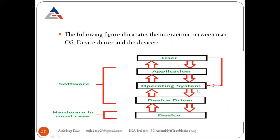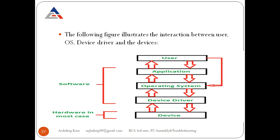The flow is: user applications → operating system → device drivers → device. For example, a device such as a keyboard, mouse, printer, scanner, or speakers has a device driver. That device driver interacts with the operating system, which has various applications used by users. This is the diagram of how a device driver fits in the system.